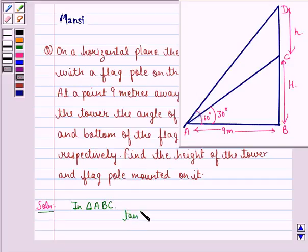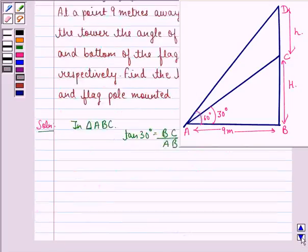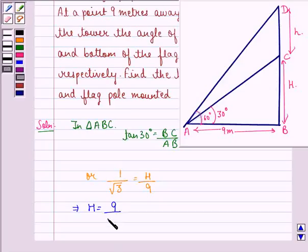tan 30° will be equal to BC divided by AB. Now the value of tan 30° is 1/√3, so we have 1/√3 = H/9 because AB = 9. This implies that H = 9/√3. Now we can multiply the numerator and denominator by √3.